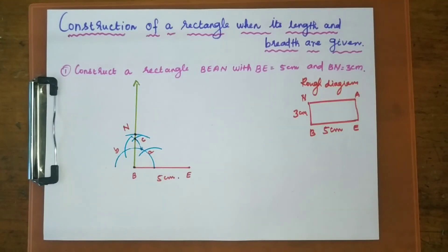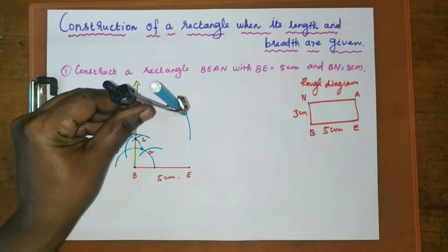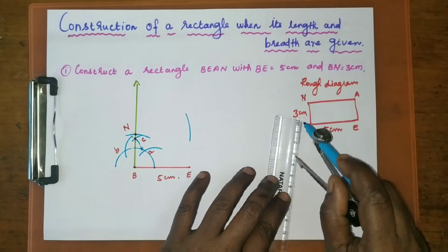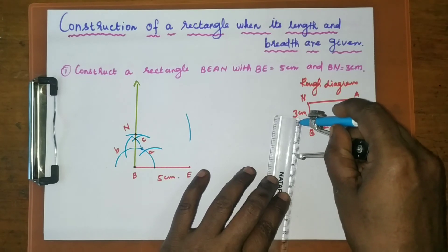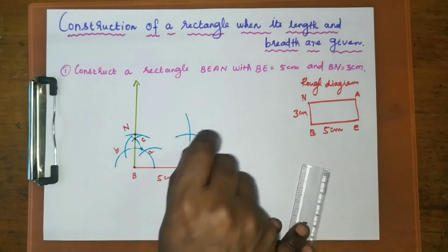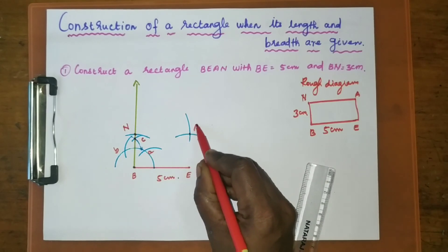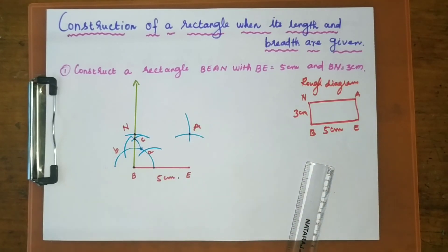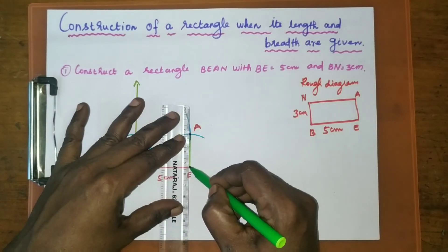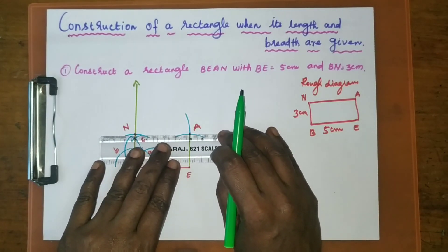From N, mark one arc of 5 cm. Similarly, from E take a 3 cm radius and mark one arc. The point where these two arcs meet is A. Now join all the lines: join A and E, and join A and N.